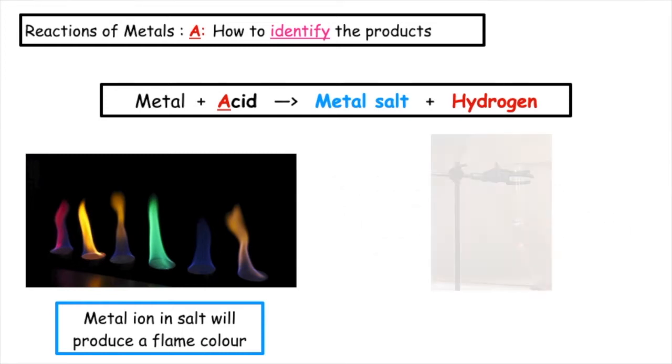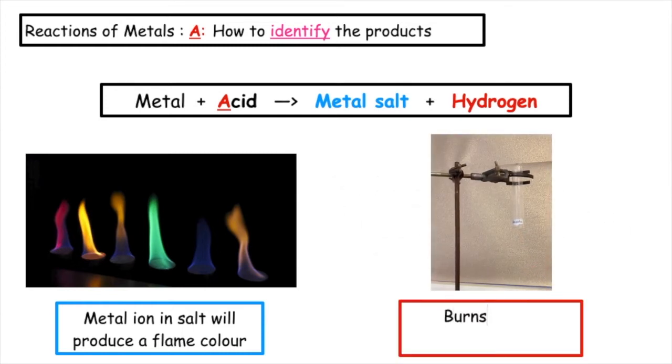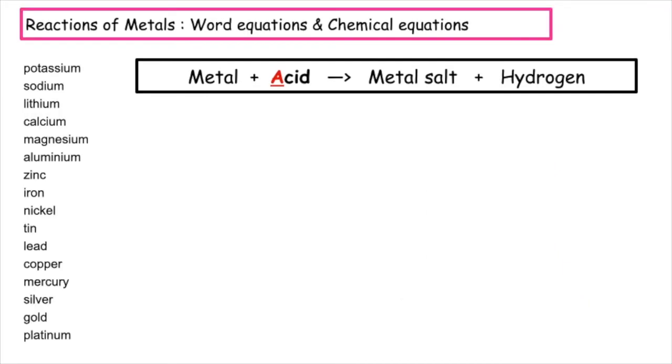The test for hydrogen gas is it burns with a pop. We need to be able to write word equations and chemical equations for metals which can react with acids. Remember that this is lead and above in the reactivity series.